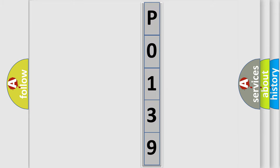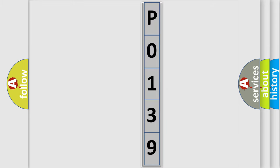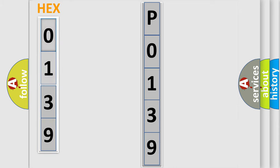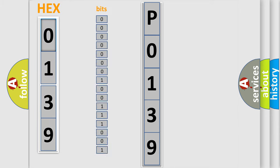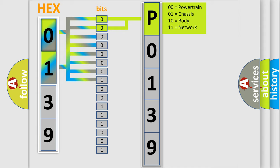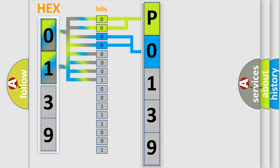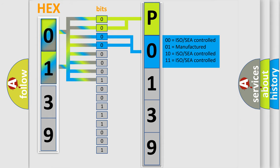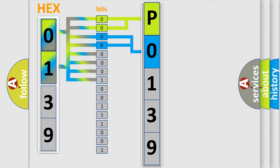The error code is split into two bytes consisting of 16 bits. One bit is the basic unit that each computer works with. The bit has two logical states: zero, low level, and one, high level. By combining the first two bits, the basic character of the error code is expressed. The next two bits again determine the second character. The last bits of the first byte define the third character of the code.